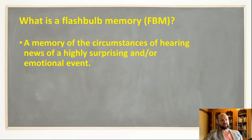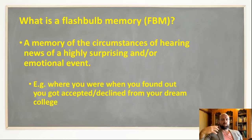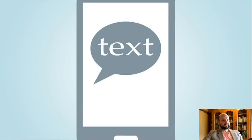According to Brown and Kulik's original 1977 theory, it's the memory of the circumstances of hearing the news of a surprising or emotional event. For example, if you're in high school and you've already been accepted to a university, the flashbulb memory would be where you were when you found out you got accepted, or maybe got a rejection letter. Or if you've ever been dumped via text, the flashbulb memory would be where you were when that happened — who was around you, how did you feel.